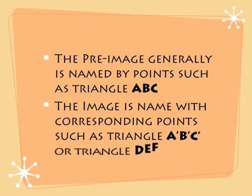The pre-image is generally named by points such as triangle ABC. The image afterwards, after it's reflected, is named with corresponding points such as A prime, B prime, and C prime, or triangle DEF — something like that.